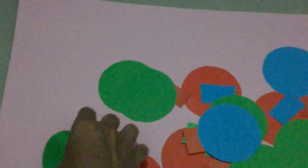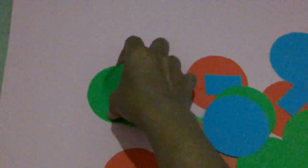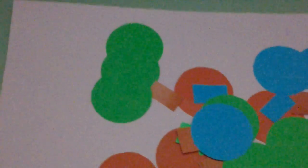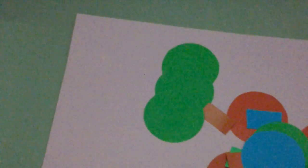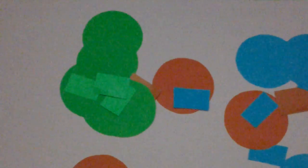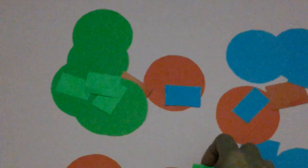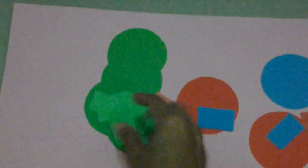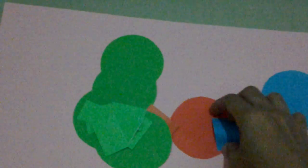For example, this one. You can see green, we have green here. Let's put this green one here. This is also green, so we can put this all together. Let's see. These all are green. These all are blue. And these are red.